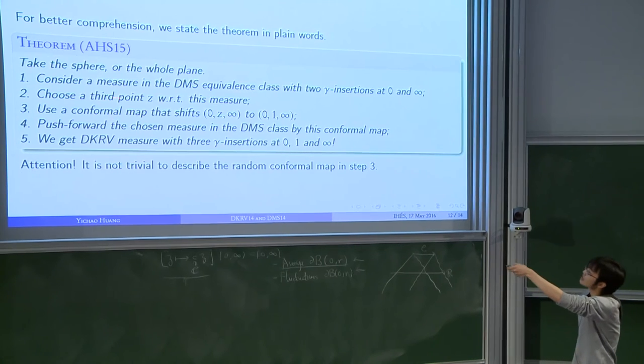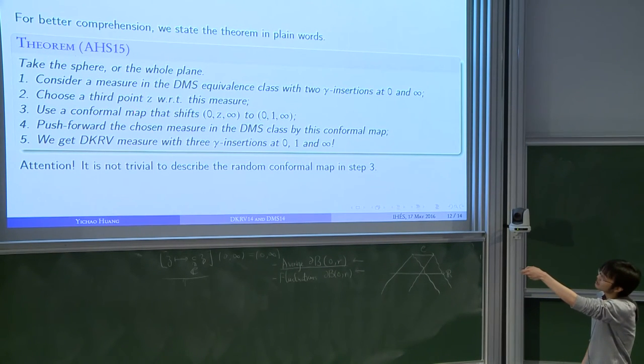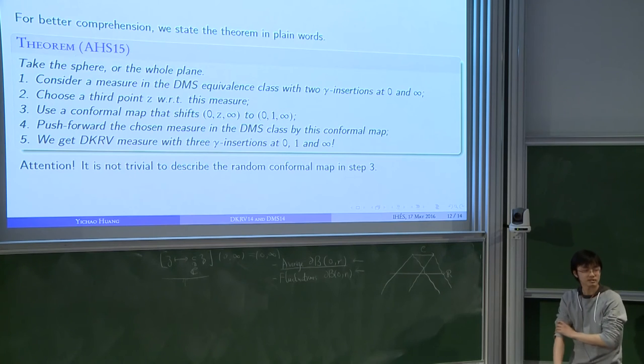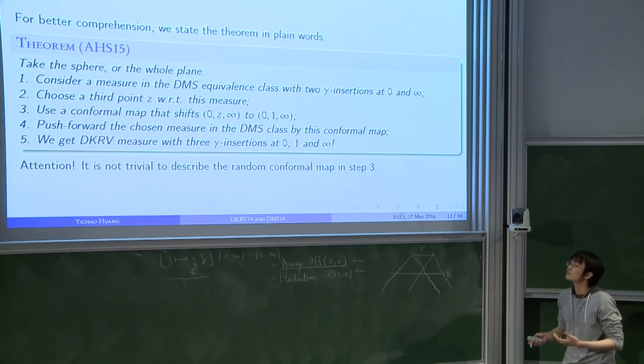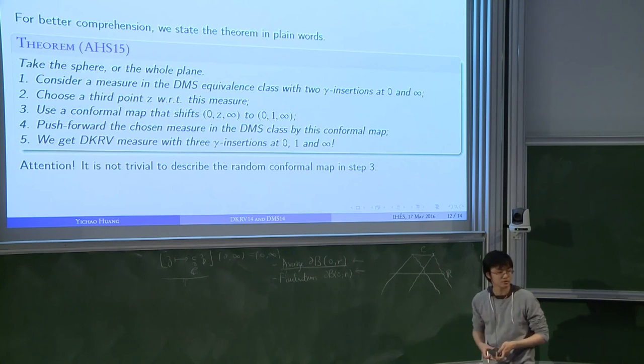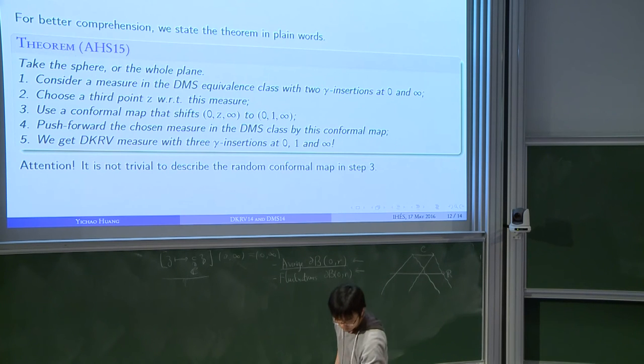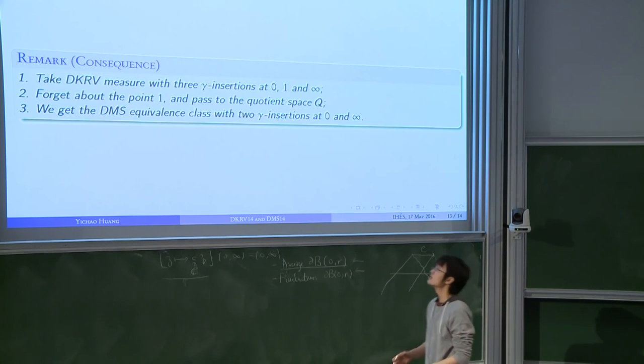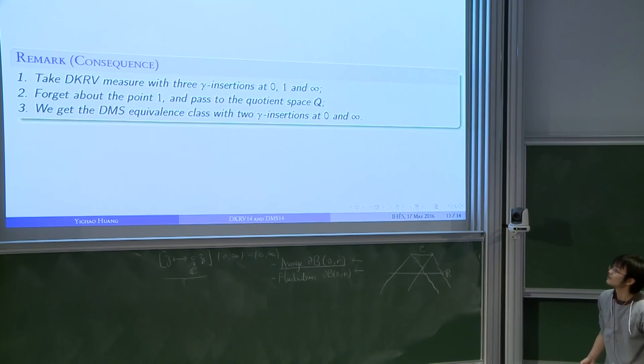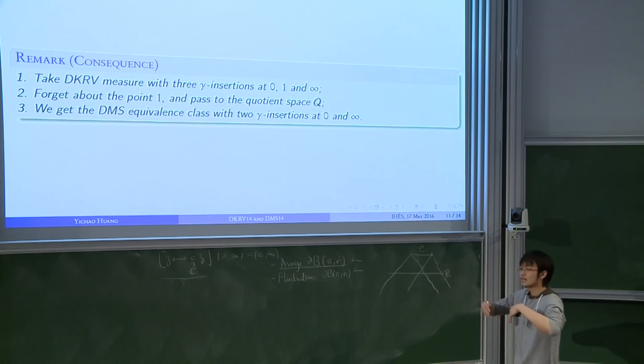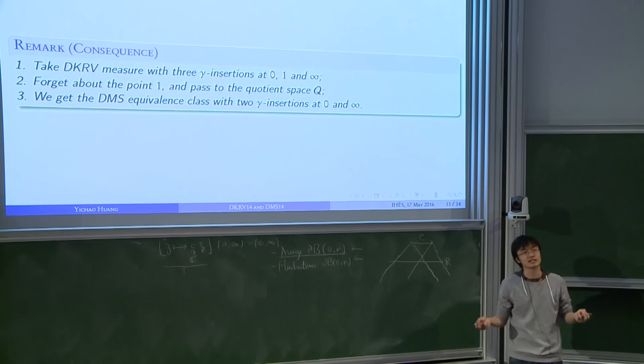So this is the intuition behind all that we do. But the difficulty here is that this conformal map is a random map, actually. So it's a little bit non-trivial to characterize this law, to describe it.